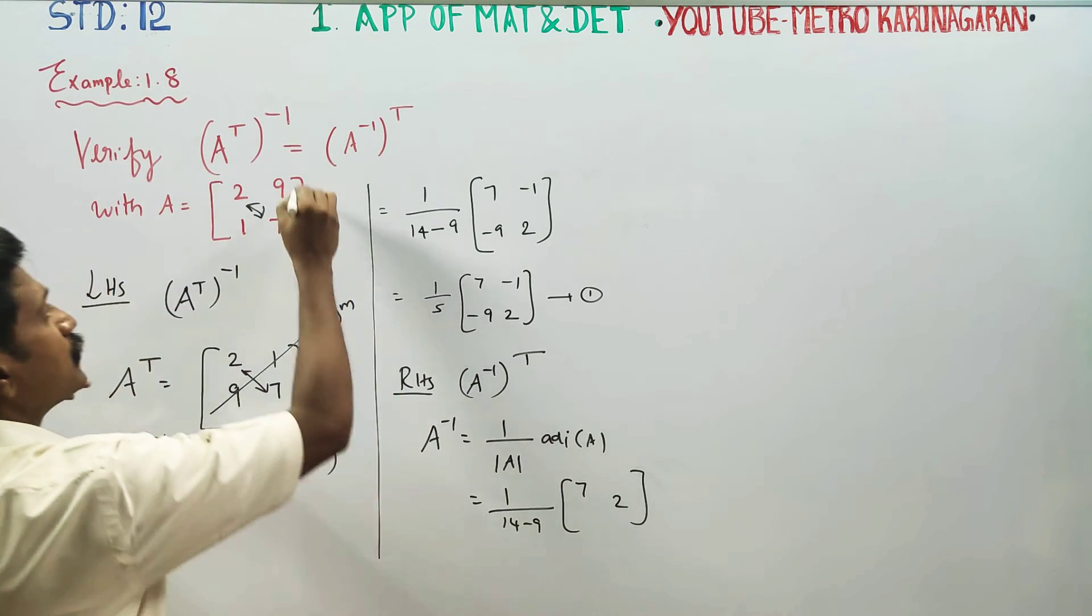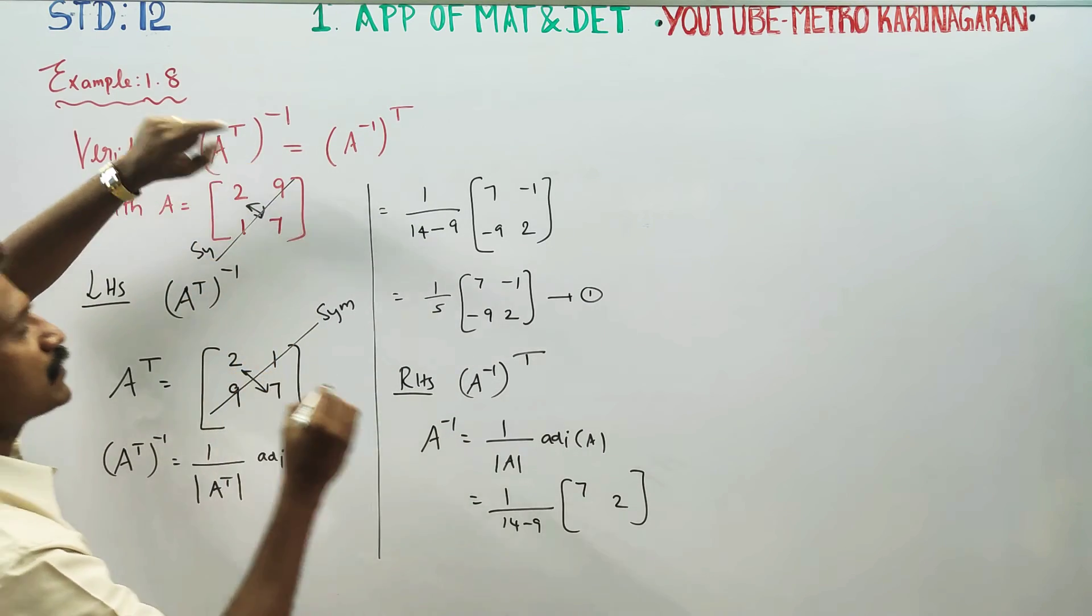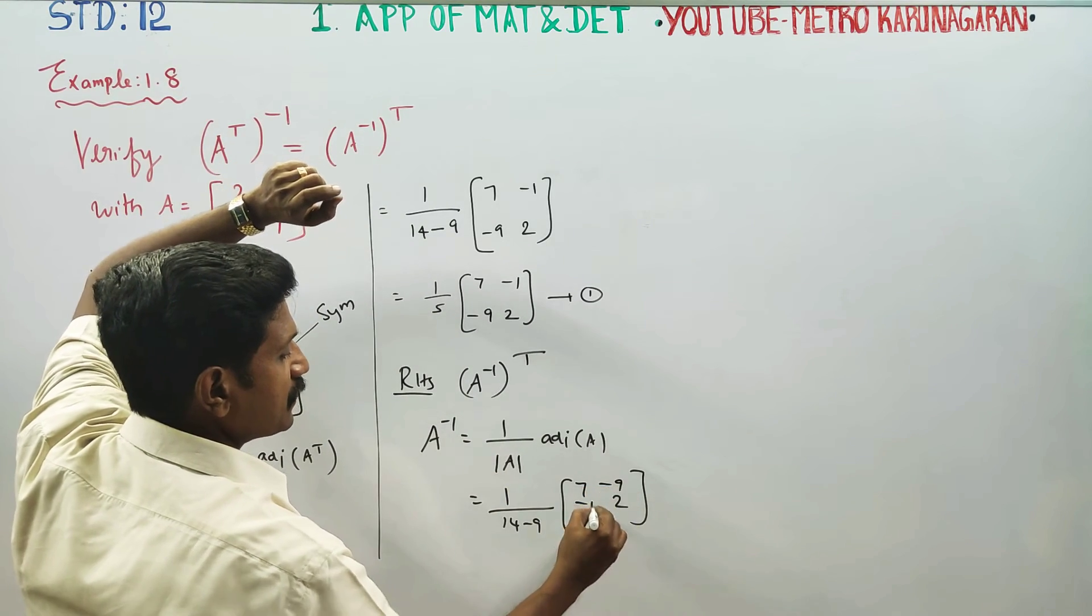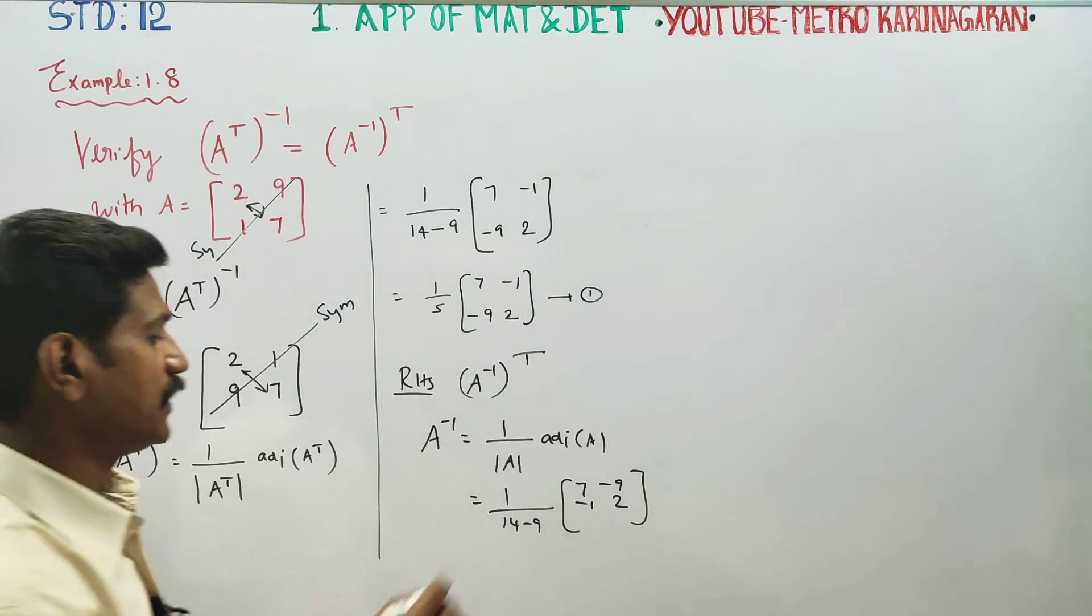you have to write symbols symbols. 9 is now, 1 is now, minus 9, minus 1. This is adjoint A.